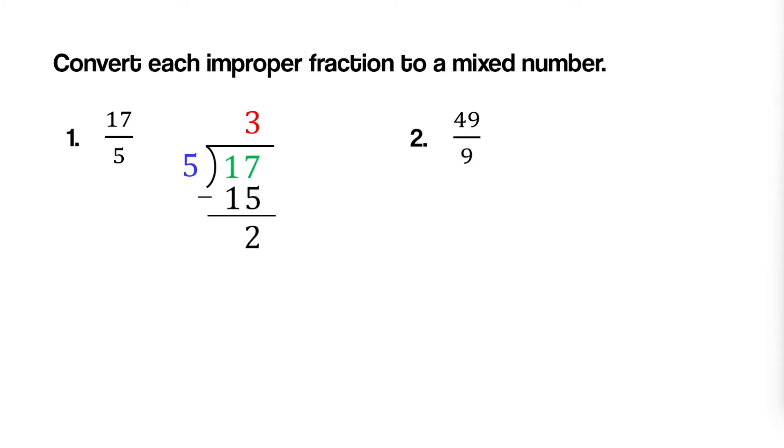The quotient three is the whole number part, and the remainder two becomes the numerator of the fraction, while the original denominator remains the same. Therefore, seventeen-fifths as a mixed number is three and two-fifths.